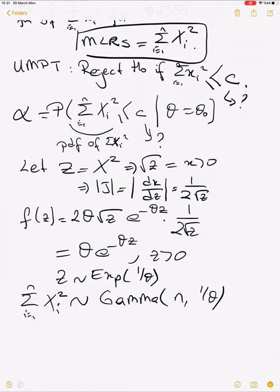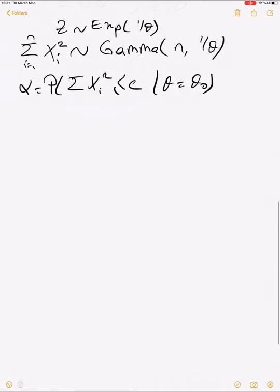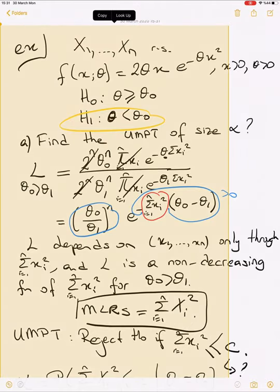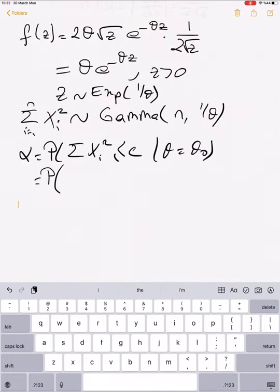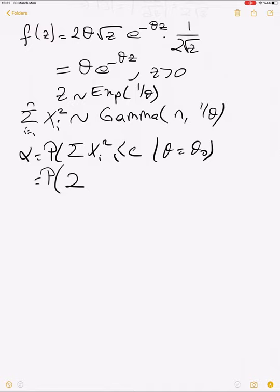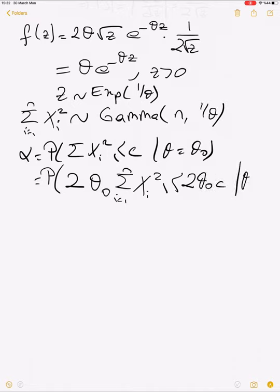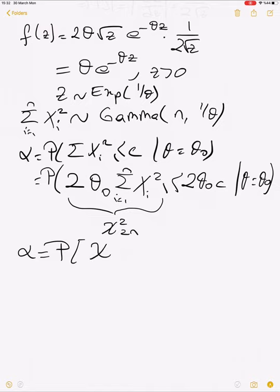We convert to a chi-squared random variable. Setting alpha equal to the probability that Σxᵢ² ≤ c given θ = θ₀, we multiply by 2θ₀ to get: alpha = P(chi-squared(2n) ≤ 2θ₀c). So 2θ₀c follows a chi-squared distribution with 2n degrees of freedom.